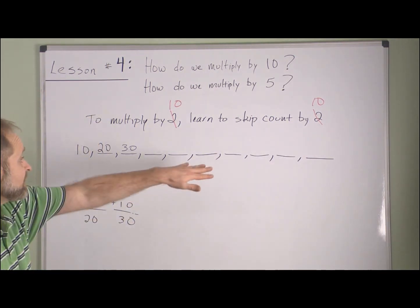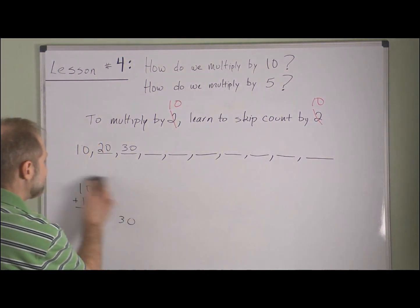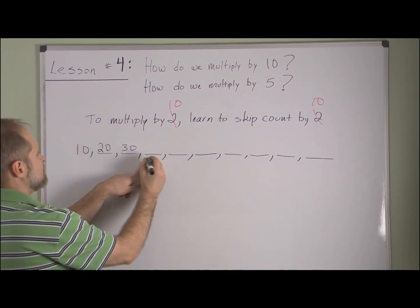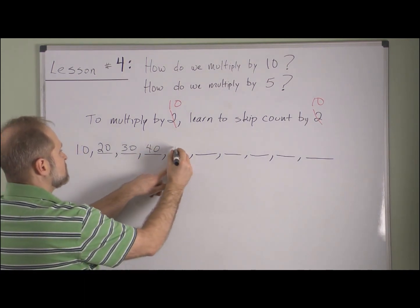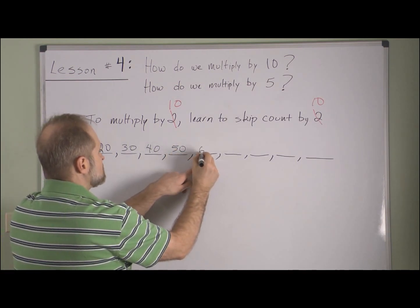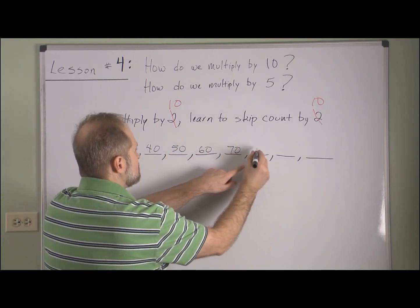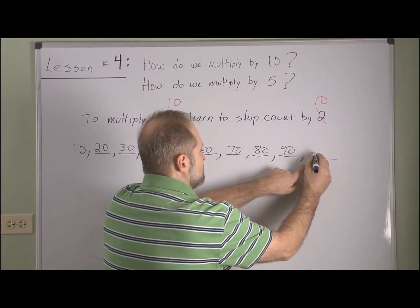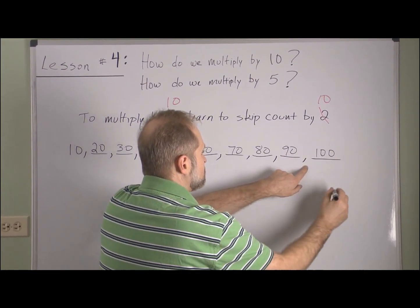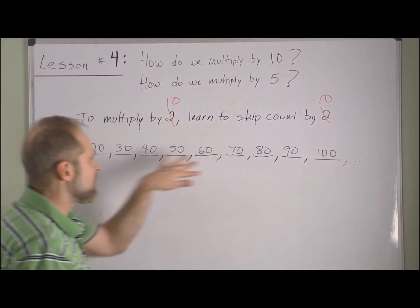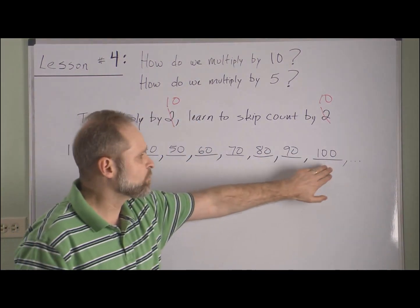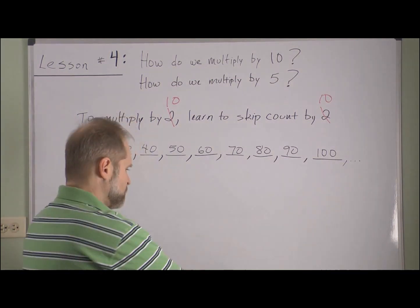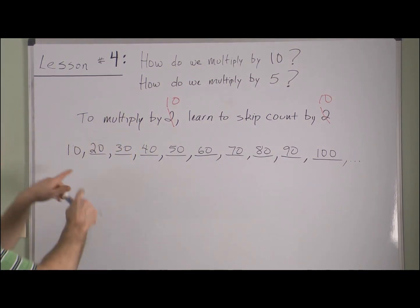Let's go ahead and take a look at what we get for the rest of these. If we do these correctly: thirty plus ten is forty, then fifty, sixty, seventy, eighty, ninety, and ninety plus ten is one hundred. The list goes on, but for our purposes we'll stop at a hundred.